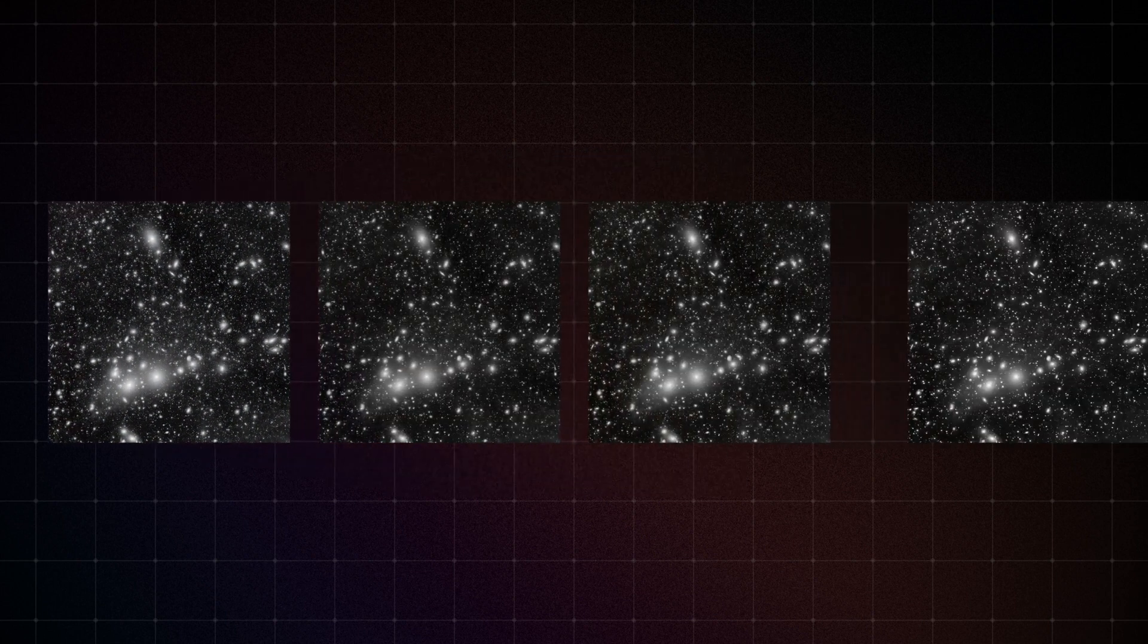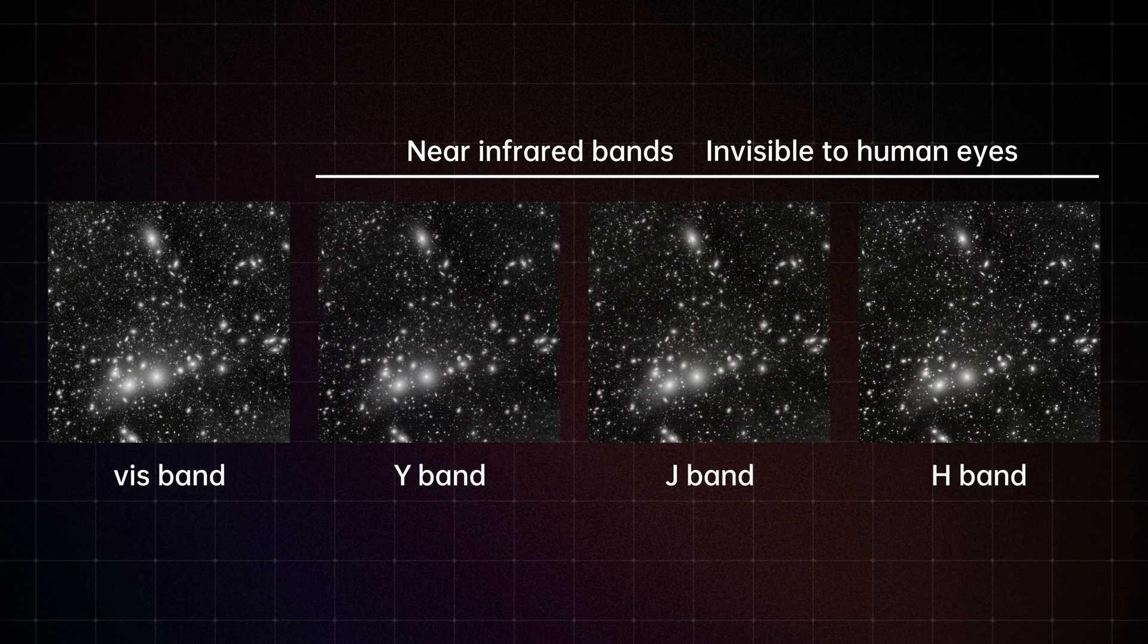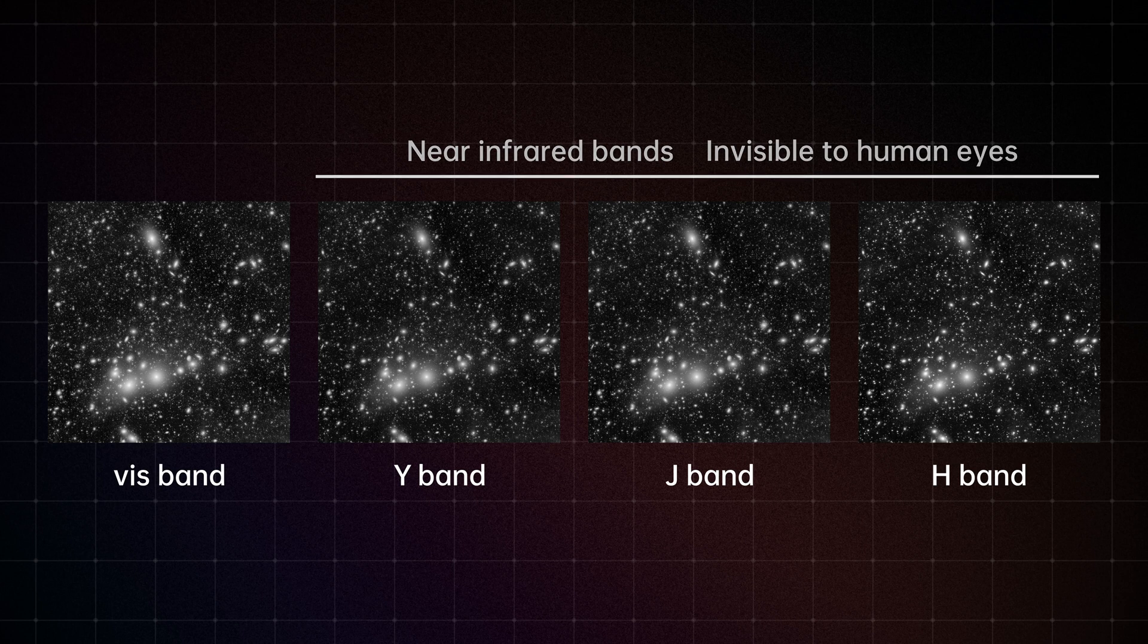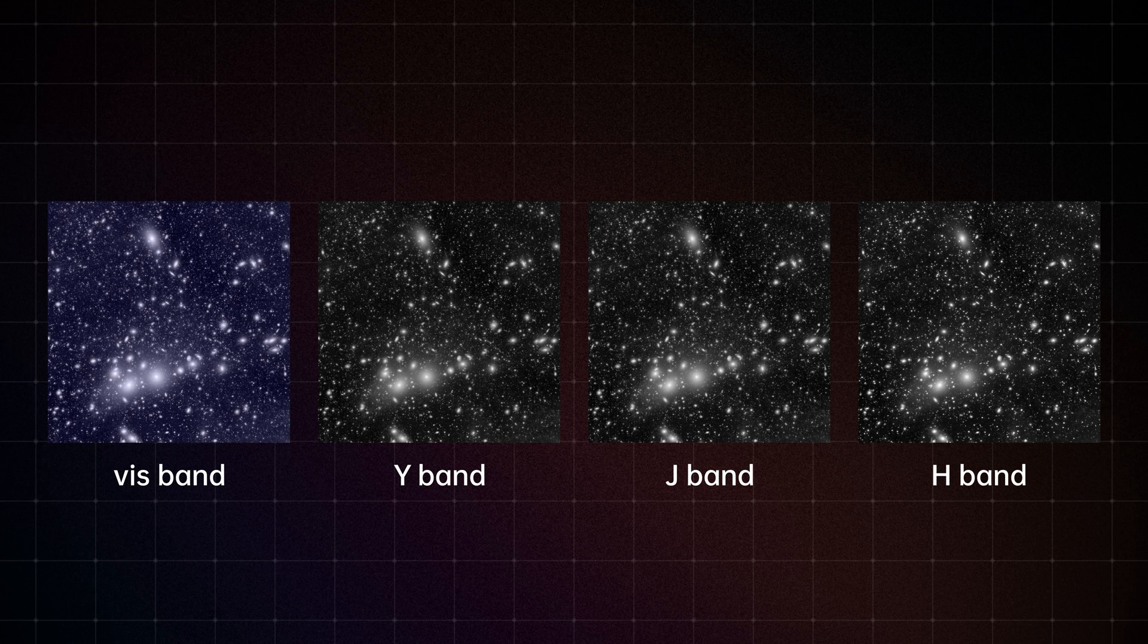As Euclid uses monochromatic detectors, images from each instrument are captured in grayscale. To transform them into a color image, we need to map the images coming from each instrument with a respective color. This mapping is what you see here.